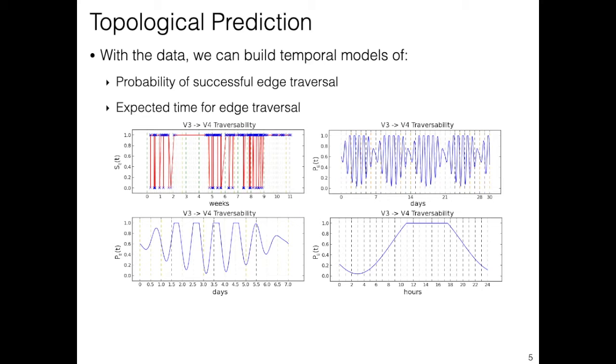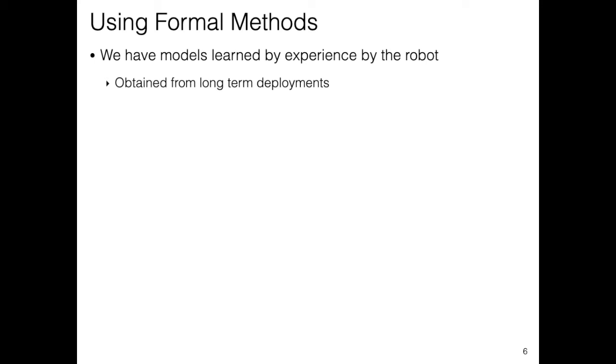In the top right plot, we can see that the model reconstructs the working days of the week, with lower probability of successfully traversing the edge during the weekend. In the bottom right plot, we can see that it also reconstructs the office hours, with the probability of success being equal to 1 between 11am and 6pm.